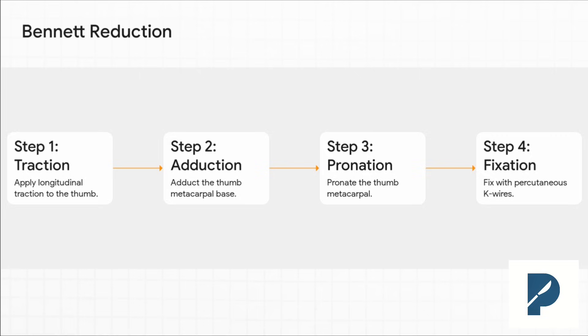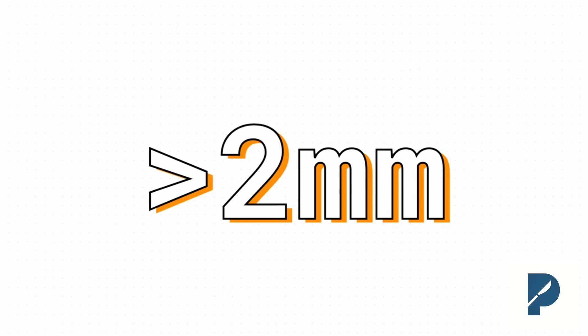Next, you adduct the metacarpal base, and then — this is the key — you pronate the thumb metacarpal. That's the move that directly counters the pull of the APL. Once you're holding that reduction, you get your K-wires in under fluoro to lock it in place. And here's another magic number: two millimeters. If after closed reduction there's still an articular step-off of more than two millimeters, that's your indication to open it up. You cannot leave that kind of incongruity in the joint — you have to get it perfect to prevent post-traumatic arthritis.